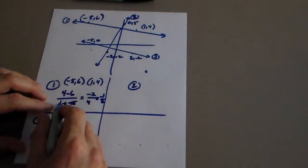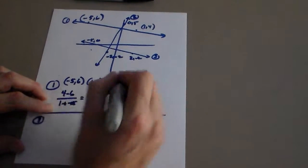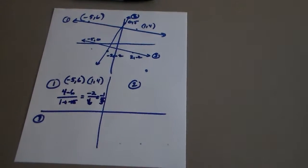Oh, look at this. I made a mistake. One plus five is six. This is supposed to be six, so it's going to be negative one-third. My apologies.